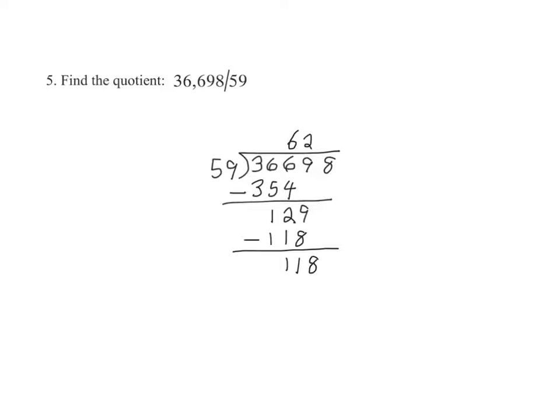And we ask ourselves, how many times does 59 go into 118? Well, we know. The answer is 2, since 2 times 59 gives us exactly 118.